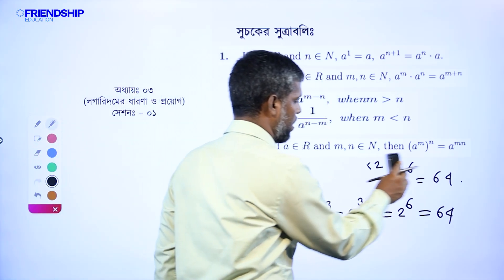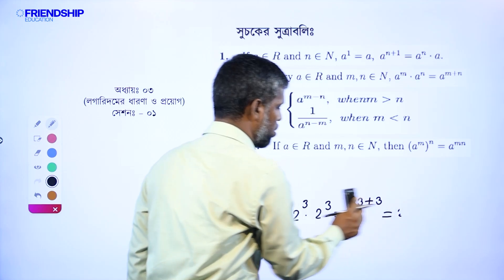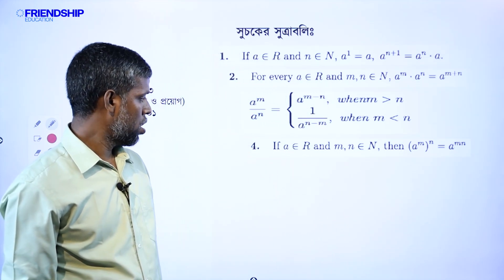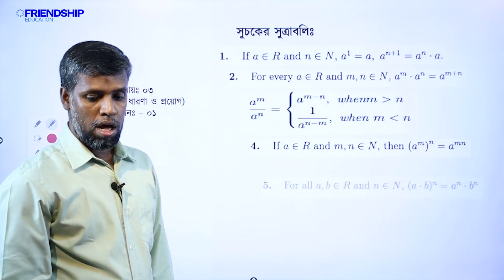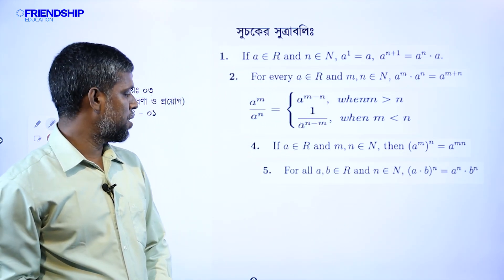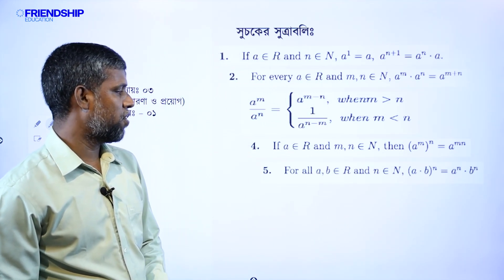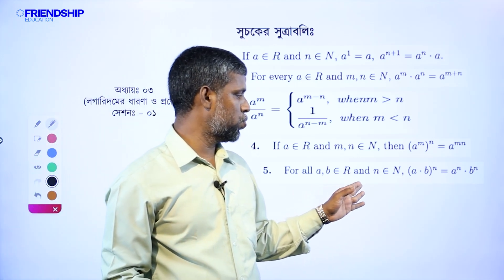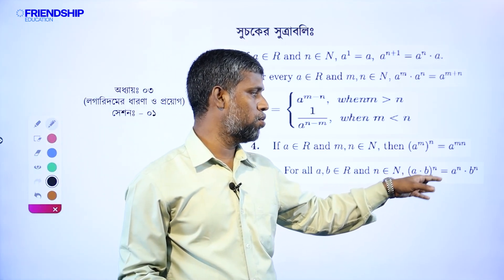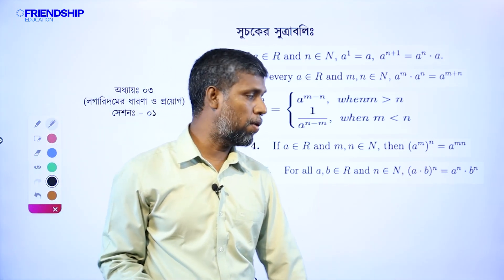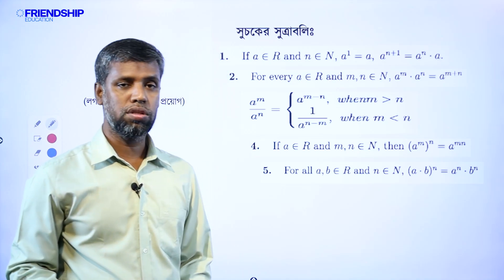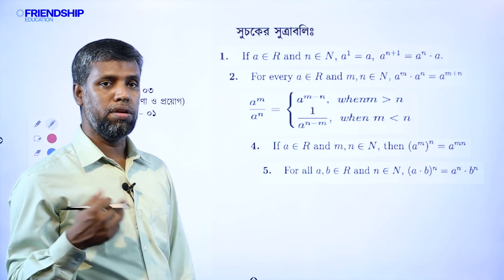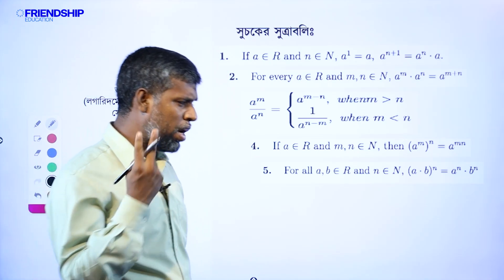We have written this formula. So, we have this formula. We have the first number formula to see. For all a, b belongs to R, n belongs to N: a into b, whole to the power n, is equal to a to the power n into b to the power n.